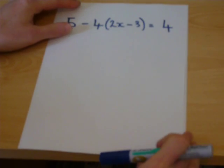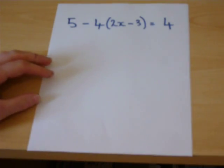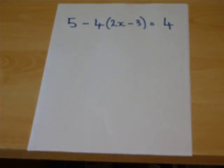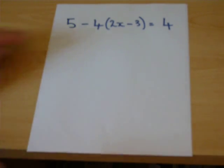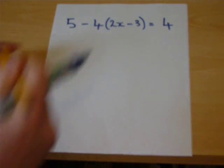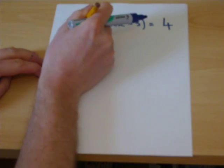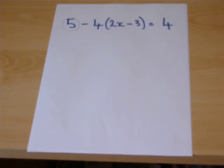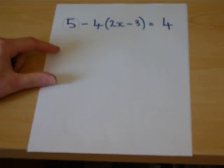We will now extend this idea to equations involving brackets. The general rule is to expand the bracket first. You must see the 5 at the start as a separate term in its own right. Do not do 5 take away 4 to begin with.